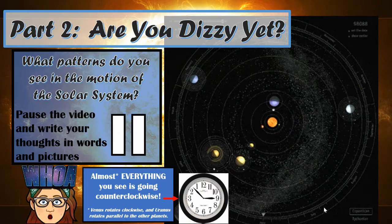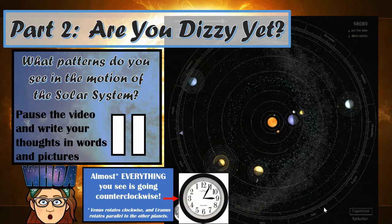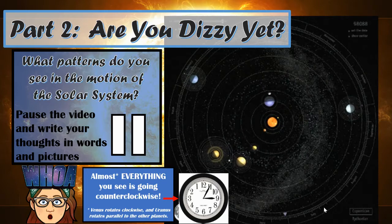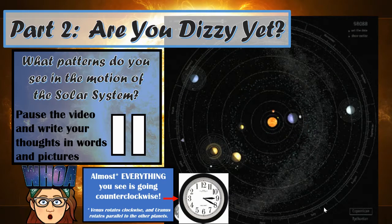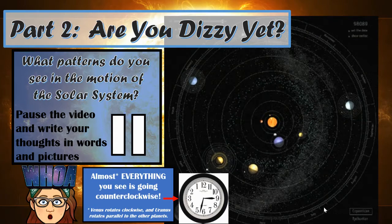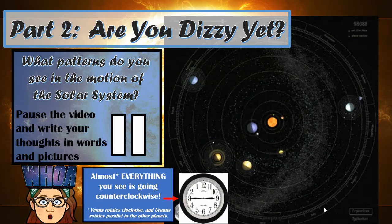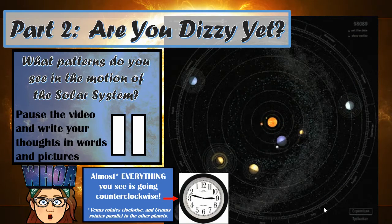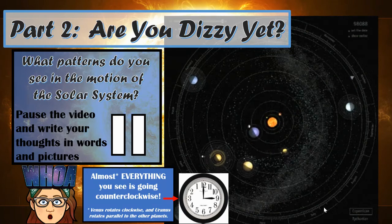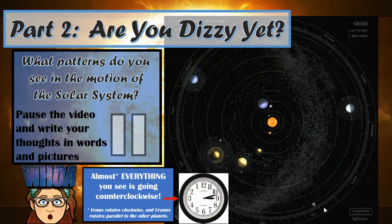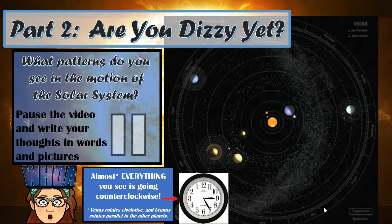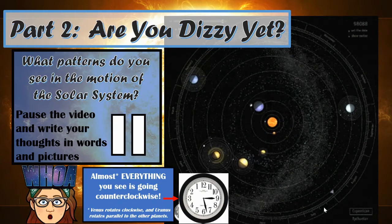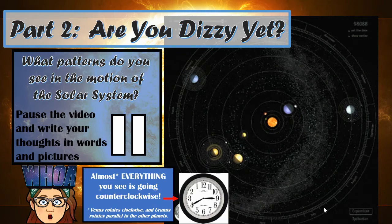I said almost everything because there are some exceptions. Venus, for example, rotates clockwise — it spins on its axis in a clockwise direction. And Uranus actually rotates parallel to all the other planets because it's been knocked on its side; it doesn't have a north and south pole, more like an east and west pole. But aside from those two, pretty much everything else in the solar system is moving counterclockwise. Please pause the video and add this to part two.